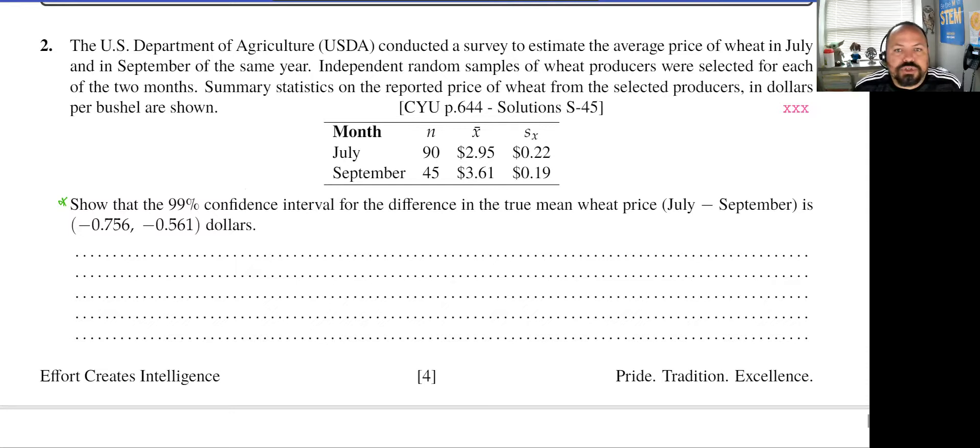we want to make sure that it's going to be from negative 0.756 to negative 0.561. And if I'm not mistaken, this is actually negative 0.759 because we're going to show how to do this by hand.